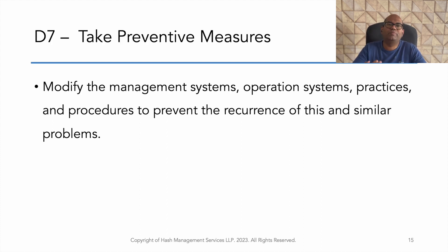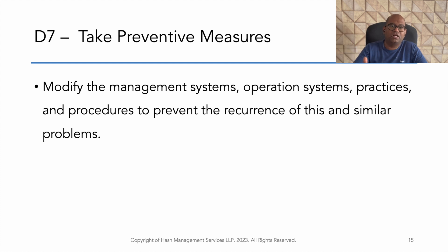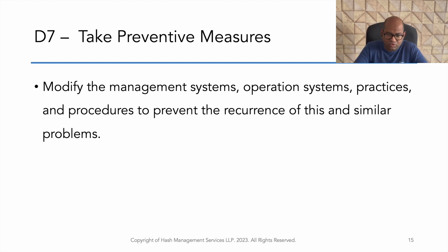D7 is preventive measures. In D7, we work on preventing the problem from recurring in other areas or similar products. This may involve updating management systems, creating SOPs — Standard Operating Procedures — and providing training. All of these activities on the process are considered preventive measures.